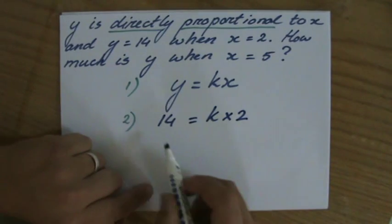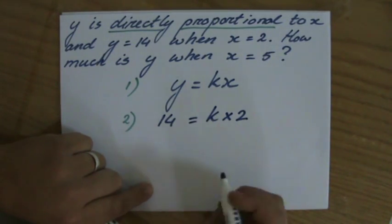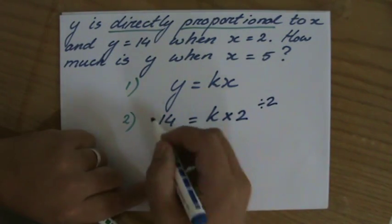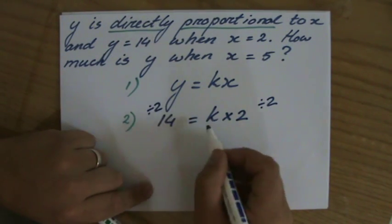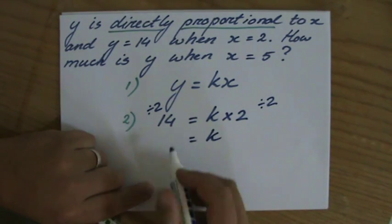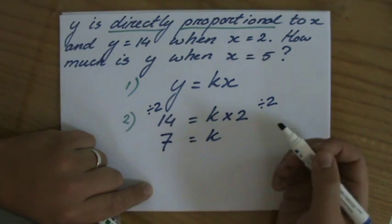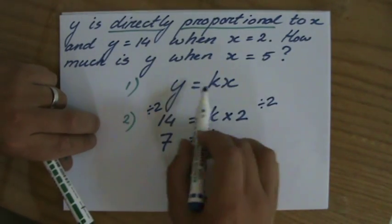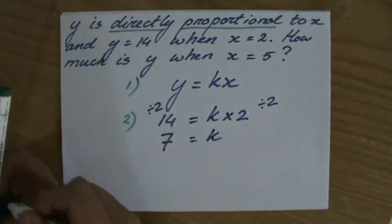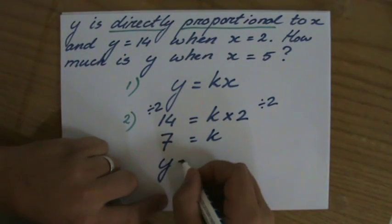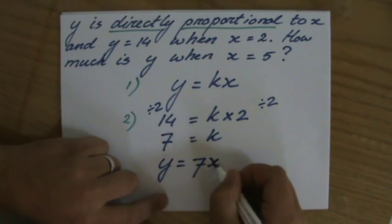Now I can work out what that constant is. If I divide both sides by 2, then k equals 14 divided by 2, which is 7. So the general equation for direct proportion is y equals kx, but for this particular scenario it is y equals 7x.